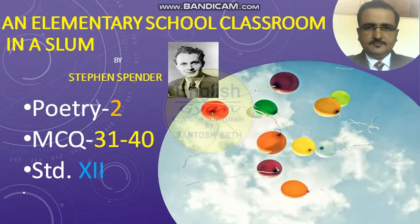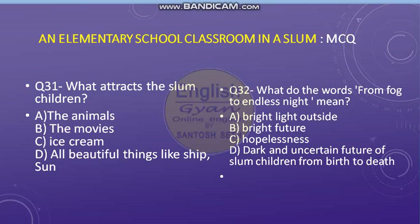I hope you have understood the imagery used. Now it is time for MCQ. Question number 31: What attracts the slum children? Options: A — the animals, B — the movies, C — ice cream, and D — all beautiful things like shape, sun, etc. Question number 32: What do the words 'from fog to endless night' mean?